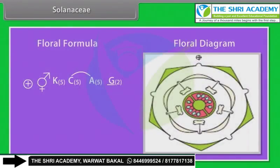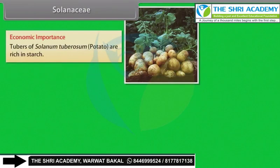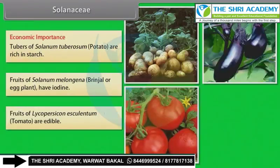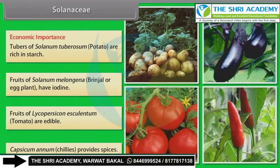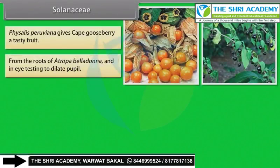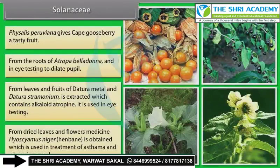Economic Importance: Tubers of Solanum tuberosum (potato) are rich in starch. Fruits of Solanum melongena (brinjal or eggplant) are edible. Fruits of Lycopersicon esculentum (tomato) are edible. Capsicum annum (chillies) provide spices. Physalis peruviana gives cape gooseberry. From roots of Atropa belladonna and from leaves and fruits of Datura metal and Datura stramonium is extracted an alkaloid atropine, used in eye testing to dilate the pupil. From dried leaves and flowers of Hyoscyamus niger (henbane), medicine is obtained used in treatment of asthma and whooping cough.